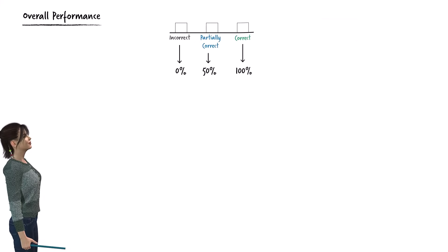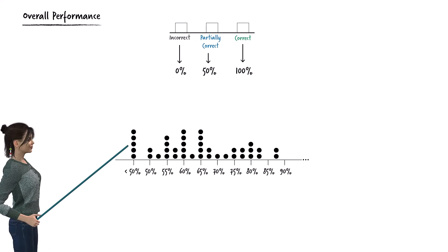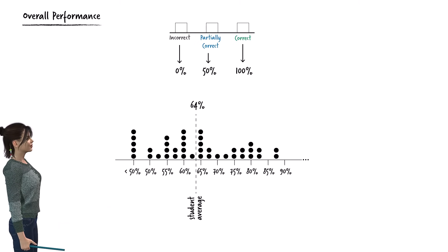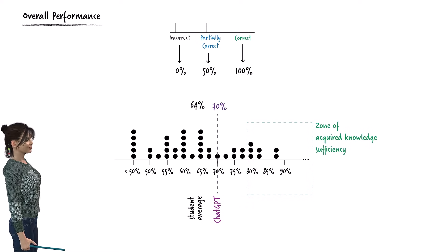To quantify the performance of ChatGPT and the students, we assign 0 points to each incorrect response, 50 points to each partially correct response, and 100 points to each correct response. The average student performance was 64%. A student who achieves 80% or higher is deemed to have a good understanding of the subject and should be capable of assisting other students. ChatGPT's performance on this test was 70%. It made fundamental mistakes when solving problems, and further research and testing are necessary to determine whether ChatGPT's reasoning skills can be improved for tutoring purposes.